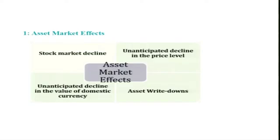Within asset market effects, there are four related aspects. The first is stock market decline. The second is unanticipated decline in the price level. The third is unanticipated decline in the value of the domestic currency — that is, depreciation if it is unanticipated. The last one is asset write-downs, especially when there are lots of non-performing assets. Let us discuss each of these under the asset market effects framework.